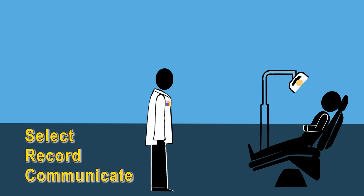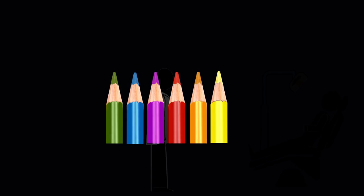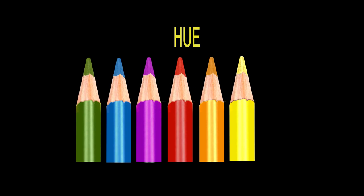There are three main words you need to know to describe color. Hue. This is the color tone. Green, blue, yellow, orange, etc. are hues.